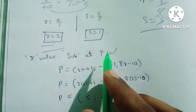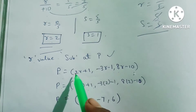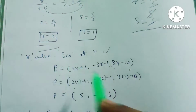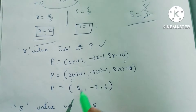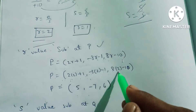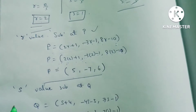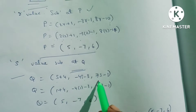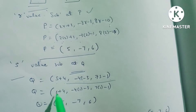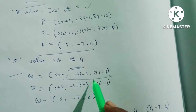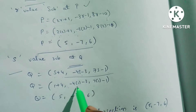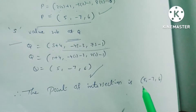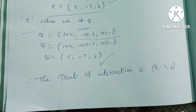Substituting R = 2 into P: x = 2(2)+1 = 5, y = −3(2)−1 = −7, z = 8(2)−10 = 6. Substituting S = 1 into Q: x = 1+4 = 5, y = −4(1)−3 = −7, z = 7(1)−1 = 6. Since P = Q, the point of intersection is (5, −7, 6).